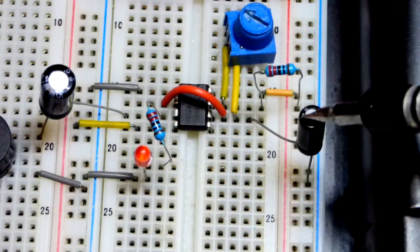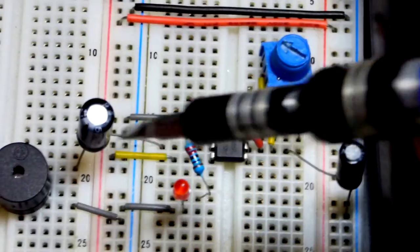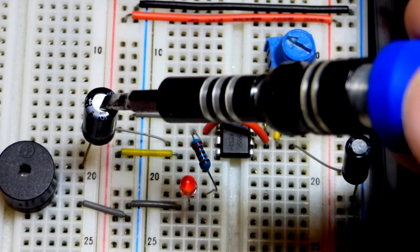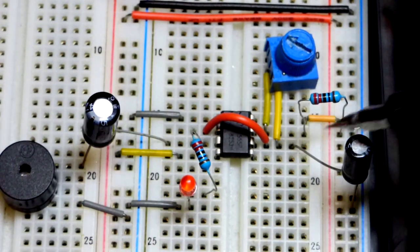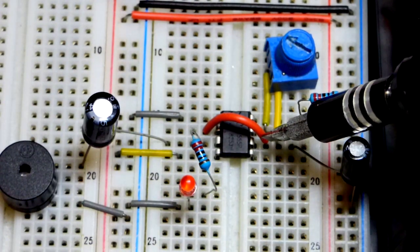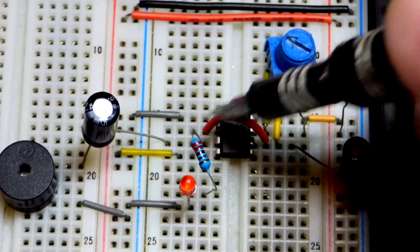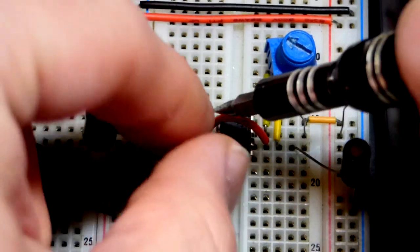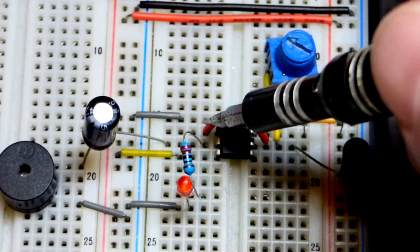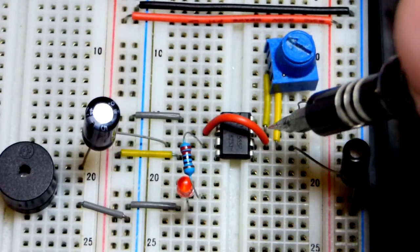This is a 4.7 microfarad capacitor. That's a 47 microfarad capacitor, just to make math easy. The threshold pin is waiting for it to get to two-thirds of the supply voltage. The trigger pin over here—they're connected directly together—pin two is waiting for one-third of the supply voltage.